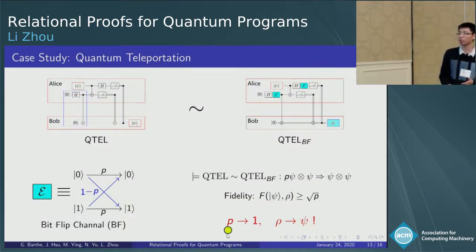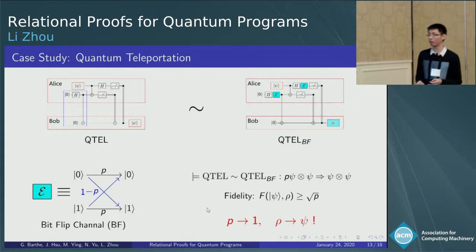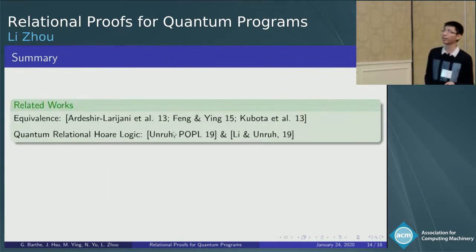That is, if P is close to 1, the noise is small, then rho is close to Psi.